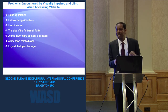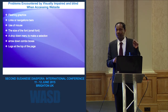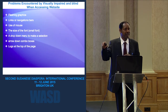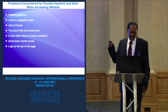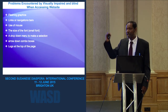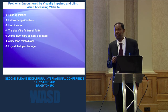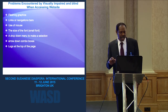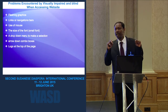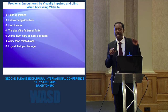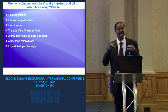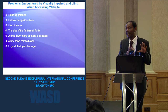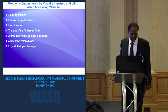Drop-down menus are a problem for visually impaired users when filling in online forms. Also, logos at the top of pages often contain no tags — the logo may be linked to the home page, so it is described as a home page link, but the logo image itself is left with no description and no alt tags.